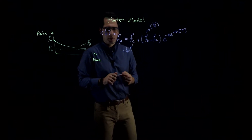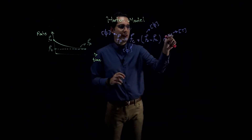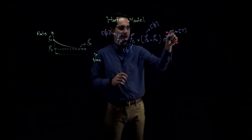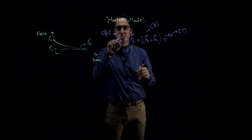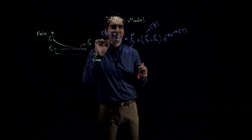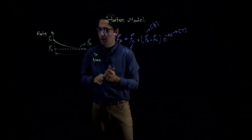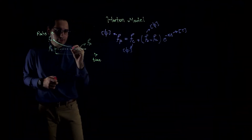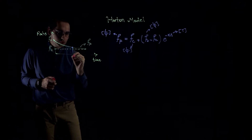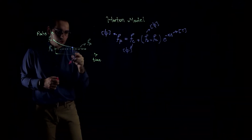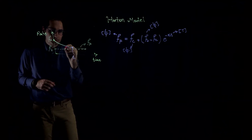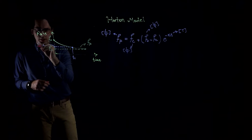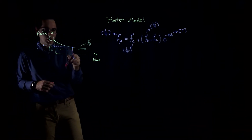In other words, for any given point at a time — let's say time t1 — if I calculate F sub p, it gives me the potential infiltration rate at that specific moment. For example, if I have time t1 on the x-axis and I have this curve, I can calculate this point, which is the potential infiltration rate at time t1.